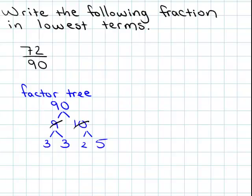I am also going to find the prime factorization of 72, so I am also going to do another factor tree for 72. Two numbers that give me 72 if I multiply would be 2 times 36.